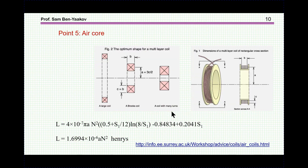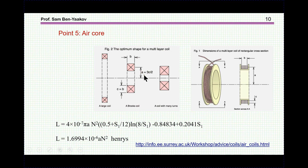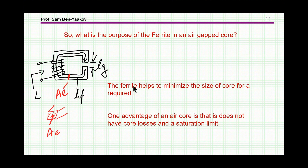Now, what about air cores? There are many shapes of air cores, and here is one example from a website from Surrey University. What we see here is an expression for the inductance you get for a coil, along with its dimensions. As it turns out, there is an optimum dimension — this ratio here. This is the inductance in the general case, and this is the inductance for this particular optimum situation, which according to an investigator by the name of Brooks is supposed to be the optimum size of an air core of this shape. So it is possible to build an air core, but they will always be larger than a core built around ferrite.